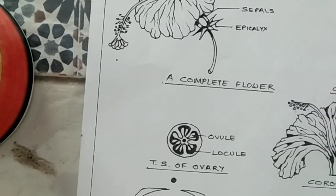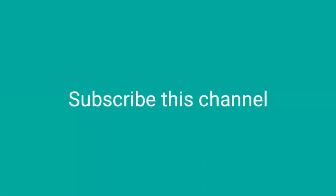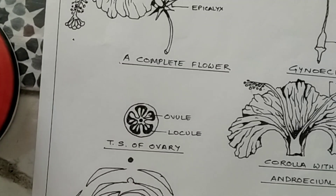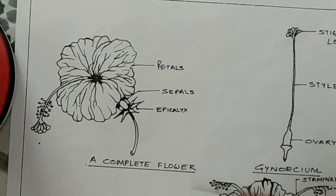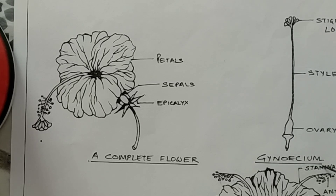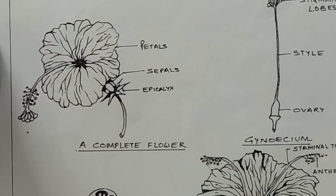In this way your display of the dissected floral parts of Hibiscus rosa sinensis is completed. This display of floral parts also gets you marks in your practical examination. Here you can see the complete diagrams of the practical of the China rose flower — the diagrams are also in proper sequence. You have to do it on a single page if possible. The complete flower has petals, sepals, and epicalyx. On the right-hand side you have to draw the gynoecium, which has three parts: stigma, style, and ovary.